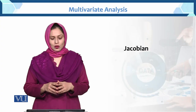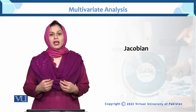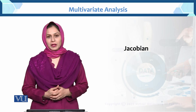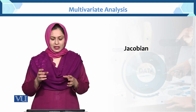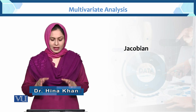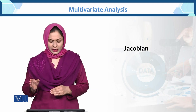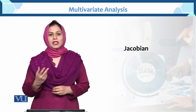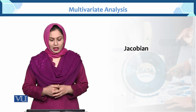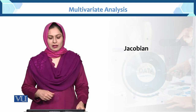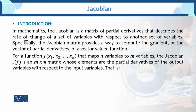Dear student, today we are going to learn the Jacobian. So what is the Jacobian? The Jacobian is a matrix of partial derivatives that describe the rate of change of a set of variables. Basically, kya hai aapke paas Jacobian? Transformed variable ki rate of change batati hai. This is called the Jacobian. So here is the introduction of the Jacobian.